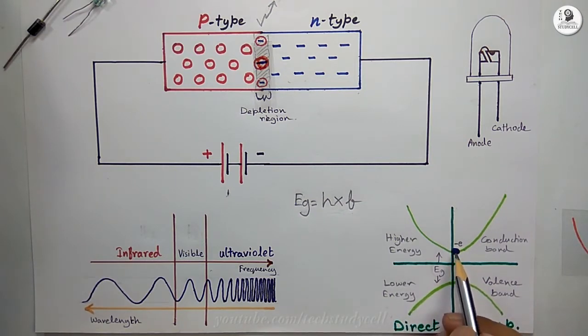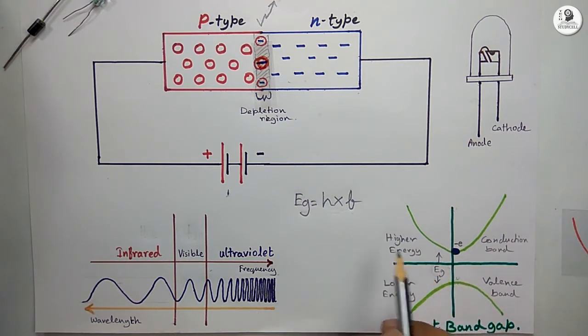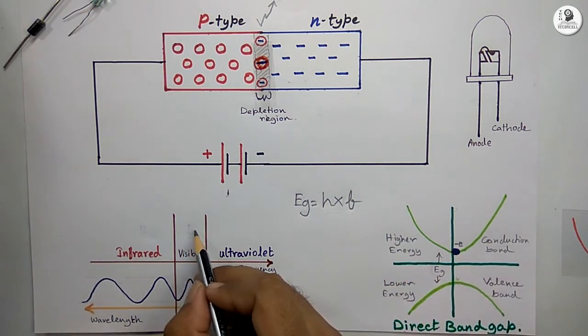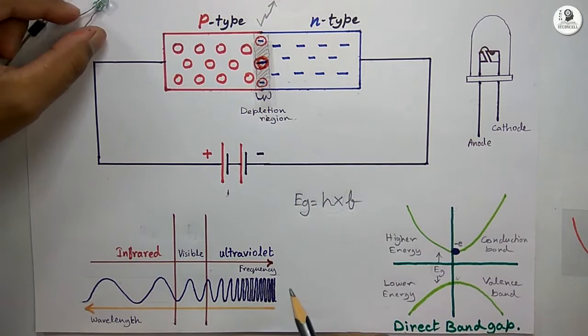So when the electron jumps from the conduction band to valence band, the photon released is equal to Eg. And for this, the frequency is within the visible spectrum and we can see the radiation.